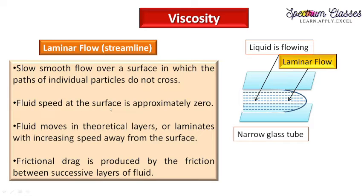Fluid speed at the surface is approximately zero, meaning the fluid in contact with the surface of the glass tube has zero velocity. Fluid moves in theoretical layers or laminae with increased speed away from the surface. These theoretical layers have increasing speed as we move away from the glass surface. Frictional drag is produced by the friction between successive layers of fluid.